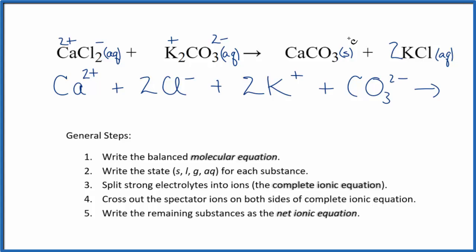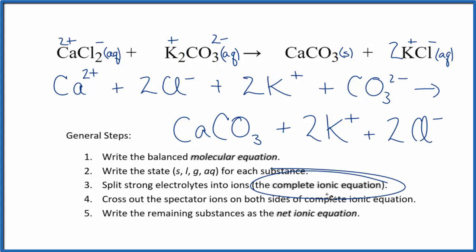For the products, we don't split solids up in net ionic equations, so we just write CaCO3, we'll keep that together. And then two potassium ions, just like in the reactants, and two chloride ions, just like in the reactants. So this is the complete ionic equation.